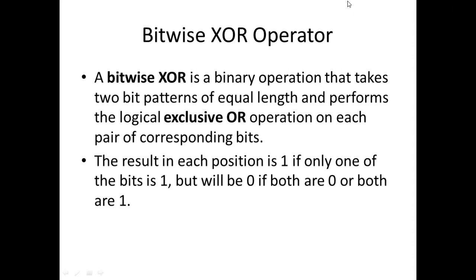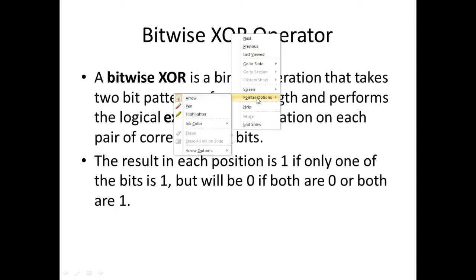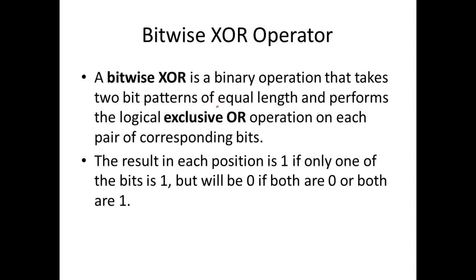A bitwise XOR operator is a binary operation that takes two bit patterns of equal length and performs the logical exclusive OR operation on each pair of corresponding bits. The result in each position is 1 if only one of the bits is 1, but will be 0 if both are 0 or both are 1.